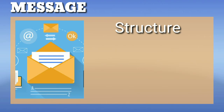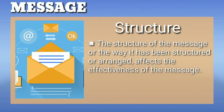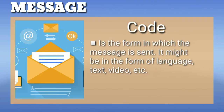If a boss wants to fire any of his employees, he has to be authoritative and cannot express his message in a casual way. This is referred to as the treatment of the message — one must understand how to present the message so it is conveyed in the most accurate form. Next is structure — the way a message has been structured or arranged affects its effectiveness. The speaker must think about how to organize his message so the receiver is interested to listen and grasp it. The last one is code — the form in which the message is sent, which might be in the form of language, text, video, etc.